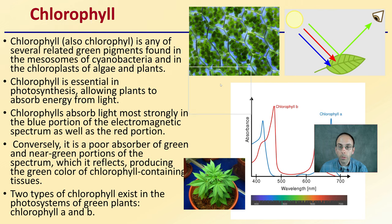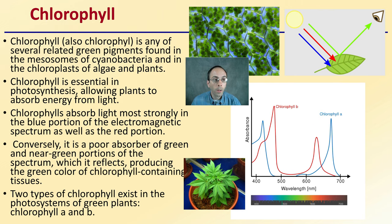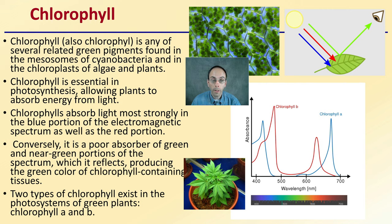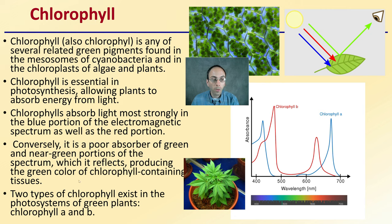When we're looking at plants, chlorophyll is important. Chlorophyll, in any form, relates to the green pigments found in the mesosomes of cyanobacteria and in the chloroplasts of algae and plants. Chlorophyll is essential in photosynthesis, allowing plants to absorb energy from light and ultimately convert it to chemical energy such as sugars. Chlorophyll absorbs light most strongly in the blue portion of the electromagnetic spectrum as well as the red portion. Even though we see the green color — meaning it's reflecting green — there is some green light that is still absorbed within plants. Conversely, it is a poor absorber of green or near-green portions of the spectrum, which it reflects, producing the green color of chlorophyll-containing tissues, but it still absorbs some of that green light.